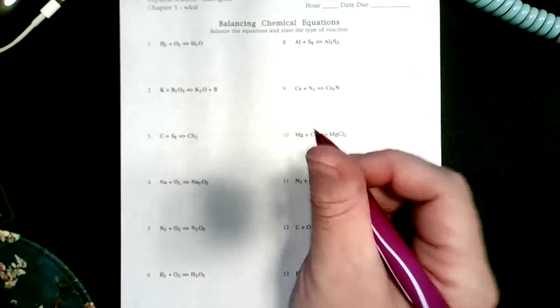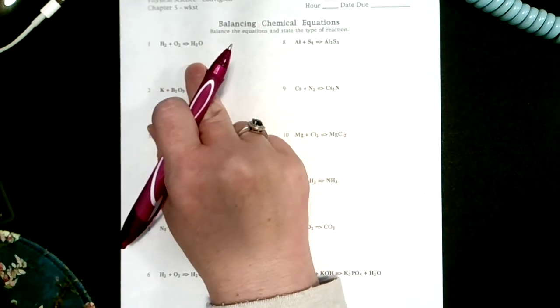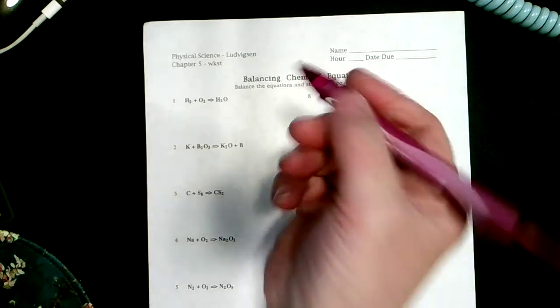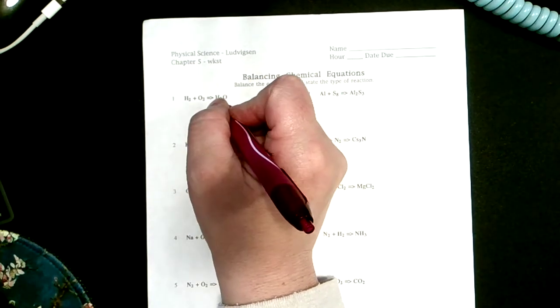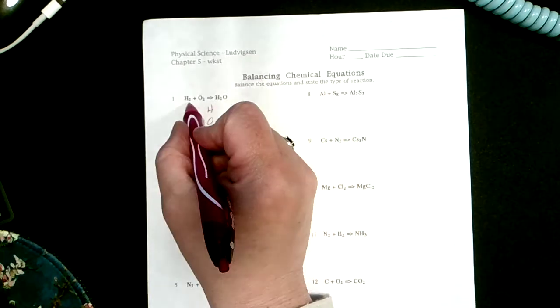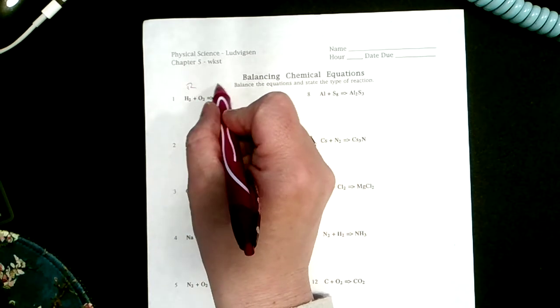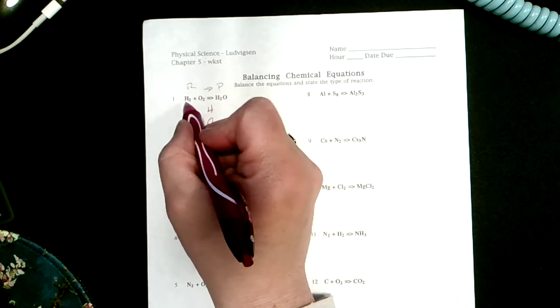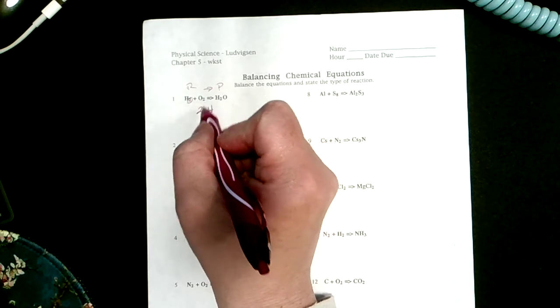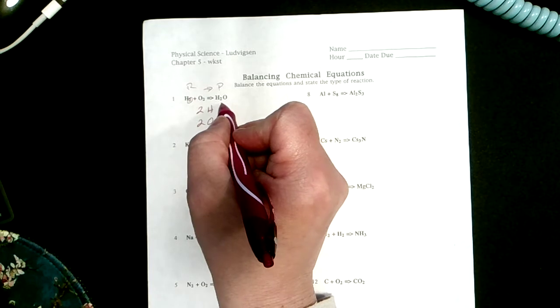Okay, so we're going to take a look at balancing chemical equations. Let's make sure we remember that we need to count our atoms. We have hydrogens and oxygens on my reactant side and my product side. With my yield sign, I have two hydrogens subscript two and two oxygens. On my product side, I have two hydrogens and one oxygen.